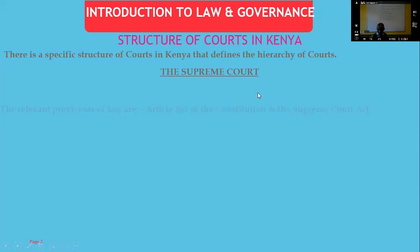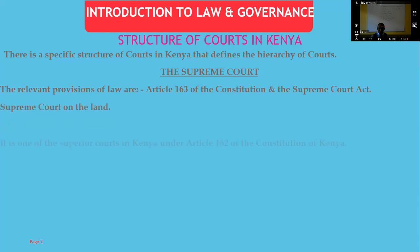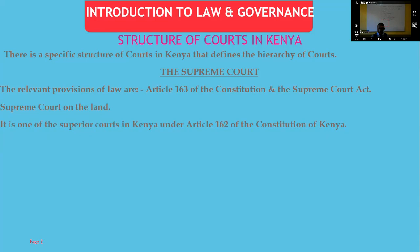Now we'll start with the Supreme Court. The relevant provisions are Article 163 of the Constitution of Kenya and the Supreme Court Act. Article 163 is the one that gives jurisdiction to the Supreme Court. Remember, the Constitution is the supreme law of the land, and it tells us that the Supreme Court is the supreme court of the land. It is one of the superior courts in Kenya defined under Article 162, where the superior courts are the Supreme Court, the Court of Appeal, the High Court, and the specialized courts under Article 162.